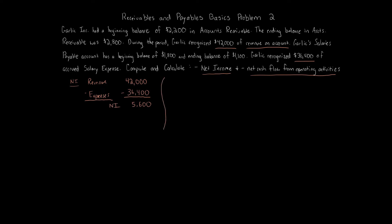That was simple — it's all about reading the information and understanding what kind of accounts you have. Accounts receivable is an asset and does not go on the income statement. Revenue goes on the income statement. Salaries payable and receivables and payables go on the balance sheet, so they don't affect net income. Given the revenues and the expenses, we use those numbers. Now we have to do the net cash flow from operating activities.